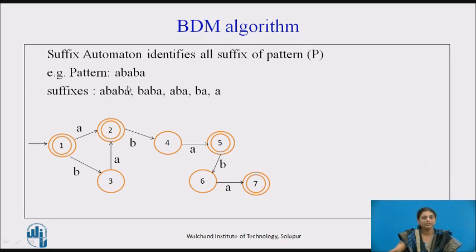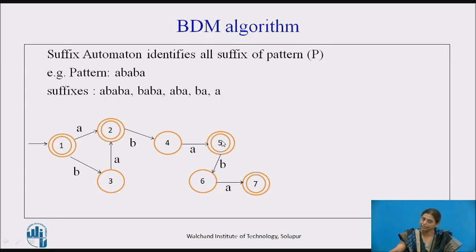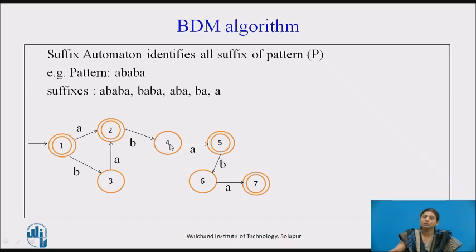Let us see with an example. Consider the same pattern ABABA. This is the automata which accepts all the suffixes of this pattern. The path from node 1 to 2 accepts 'A', which is one suffix. Path 1-3-2 accepts 'BA'. Path 1-2-4-5 accepts 'ABA'. Path 1-3-2-4-5 accepts 'BABA', and the full path accepts 'ABABA'. Node 4 is an internal non-accepting state, so 'AB' is a substring but not a suffix.